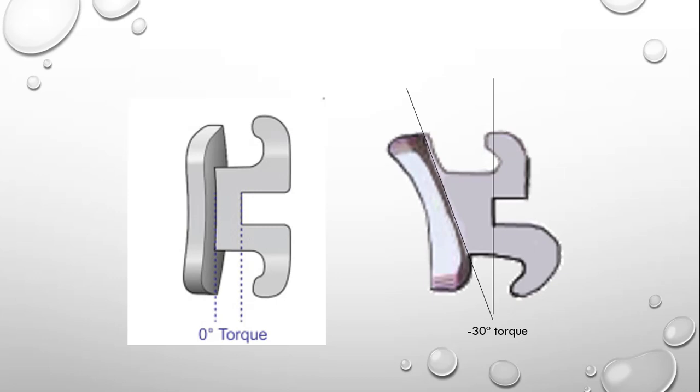And on my right hand side, this is straight wire appliance or contemporary edgewise bracket. I have shown this bracket for lower first molar given 30 degree torque within the bracket base. Now instead of using standard edgewise bracket, if you bond contemporary edgewise bracket on this molar,